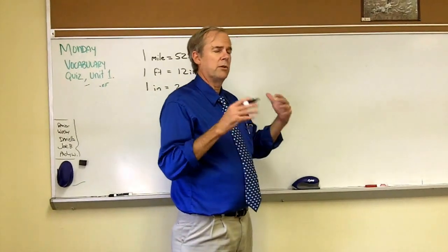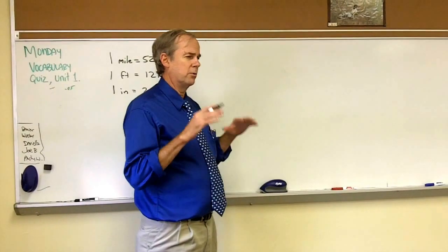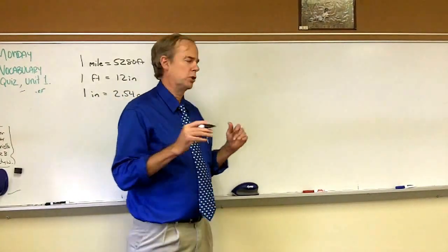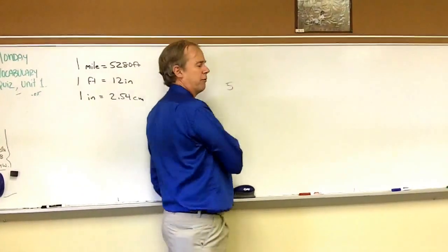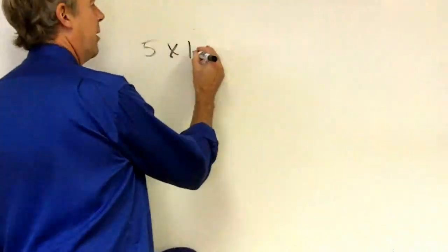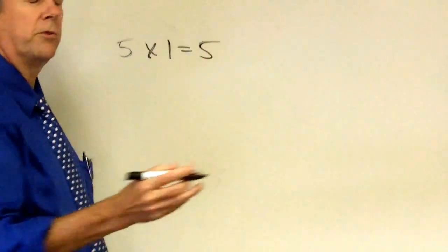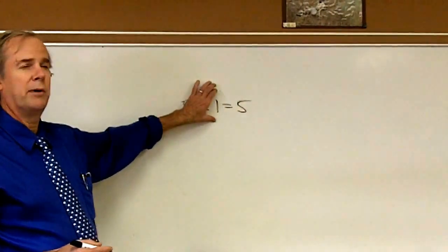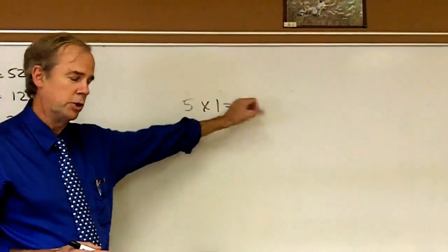As an example of really what the whole process comes down to is quite simple. It's the identity principle of multiplication. If you take the number 5 and multiply it by 1, of course you get 5. That's because if you take any value and multiply it by 1, the value remains unchanged.